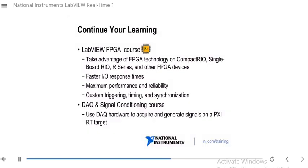One course you can take is the LabVIEW FPGA course. If you are using Real-Time and you also have an FPGA available — for example, if you have a CompactRIO, Single-Board RIO, or a PXI RT system with an R Series board or some other FPGA device — you can take this course to figure out how to take advantage of the FPGA. With FPGA, your logic is implemented on hardware on an FPGA chip, giving you faster I/O times, better performance, better reliability, even better determinism, and the ability to do custom triggering, timing, and synchronization.